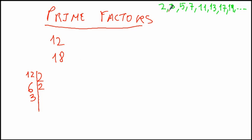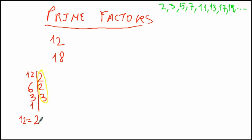Now we can't divide 3 by 2 again, so we have to take the next prime, which is 3. So 3 divided by 3 is 1. Here on the right we have the factors.